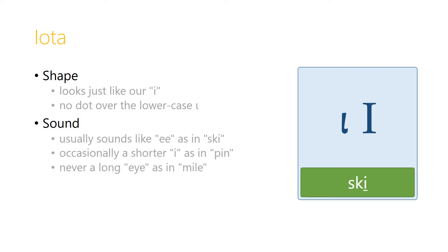The letter iota looks just like our letter I. The uppercase is exactly like our uppercase I, and the lowercase looks very close to our lowercase letter I, but doesn't have a dot above it. The sound is usually like our E sound, as in ski. Occasionally it can make a shorter I, as in pin, but if you always pronounce it as E, as in ski, you'll be fine. It never makes an I sound like the I in mile — it's always the E sound.